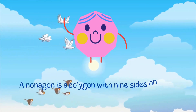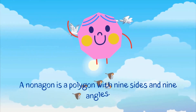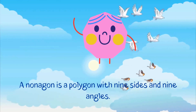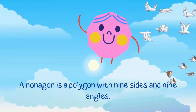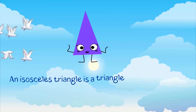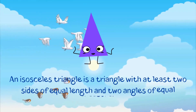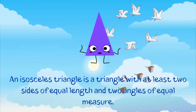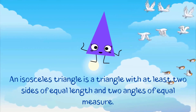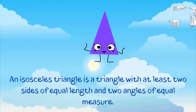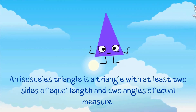A nonagon is a polygon with nine sides and nine angles. An isosceles triangle is a triangle with at least two sides of equal length and two angles of equal measure.